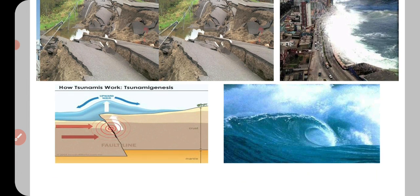Tsunami kab aati hai? Tsunami ka matlab hota hai storm waves. Bahut unchi unchi lehren samundar mein banti hain jo aakar samundar ke kinaron se takrati hain. Ye unchi lehren kyun banti hain? Kyunki seabed pe, jahaan samundar ke andar jo surface hoti hai, wahaan earthquake aata hai. Isi wajah se jo waves hain, woh bahut vishal roop le leti hain aur aakar samundar ke kinaron se takrati hain. Isse bahut sari jaan-maal ka nuksan hota hai.